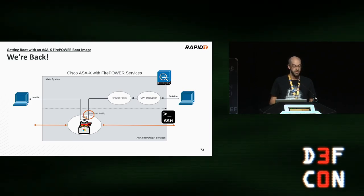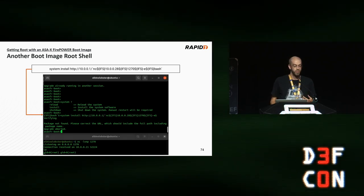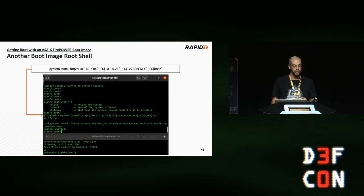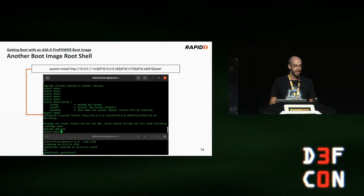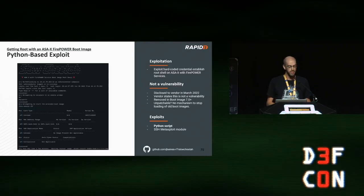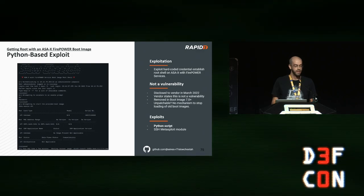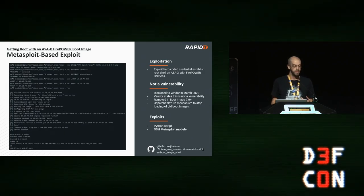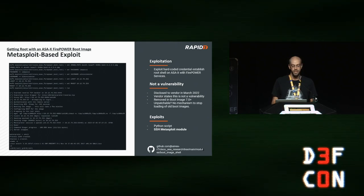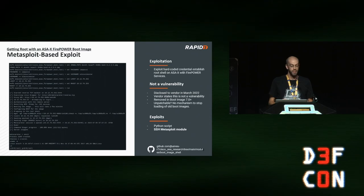Cisco said this is not a vulnerability because there are no security expectations during the Firepower installation process. They had the same response when we reported a command injection issue in the boot image. But vulnerability or not, the hard-coded credentials are very useful. I've written a couple of exploits that automate the uploading and configuration needed to take advantage of this. The Metasploit version catches a reverse Meterpreter shell. Cisco did remove the hard-coded credentials from a recent version of the boot image, but since the ASA doesn't prevent you from using older boot images, it's not a particularly useful mitigation — it's kind of a forever-day.